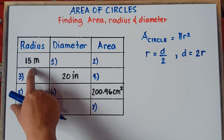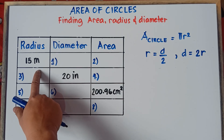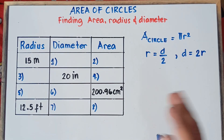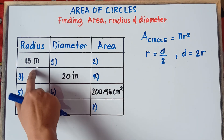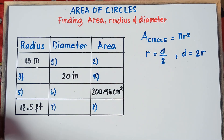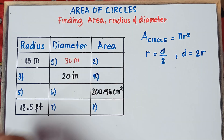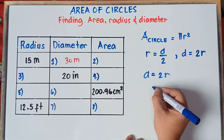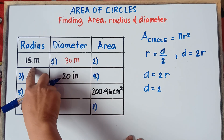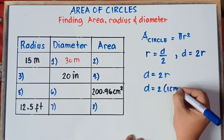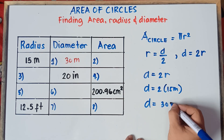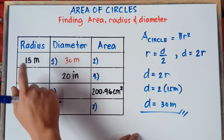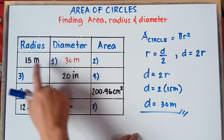Let's start with example number 1. We have a given radius of 15 meters, and we're told to find the diameter. The diameter equals 2 times the radius. So 2 times 15 meters gives us a diameter of 30 meters. Just simply multiply the radius by 2. Do not forget the units: 30 meters.